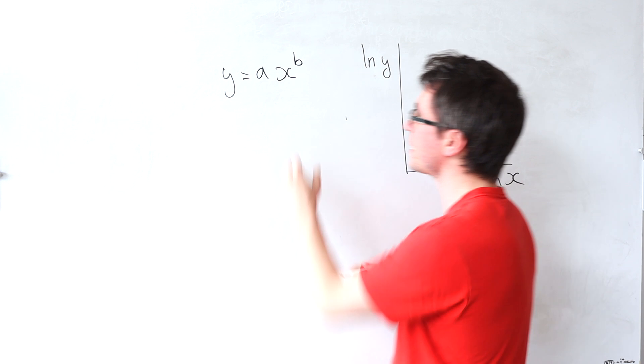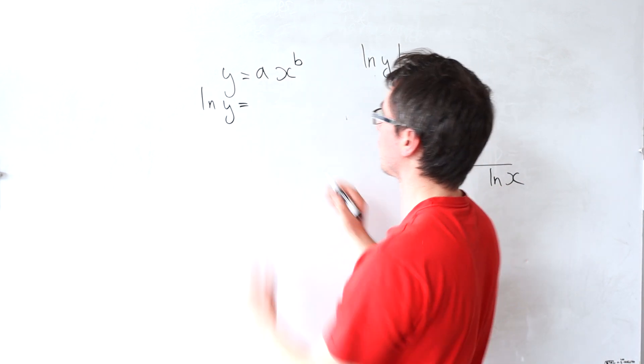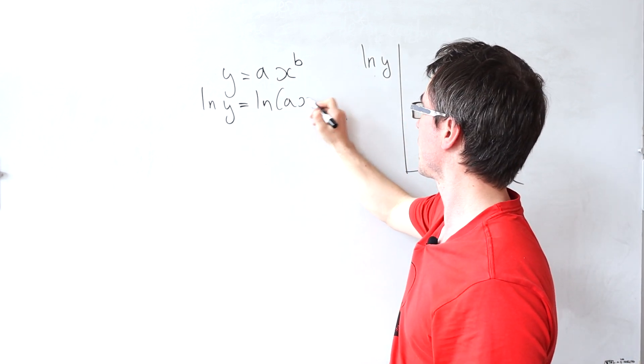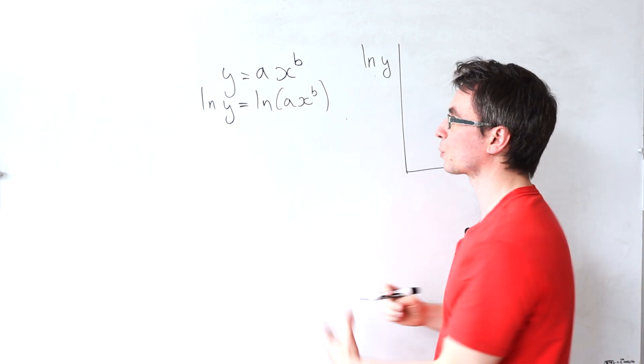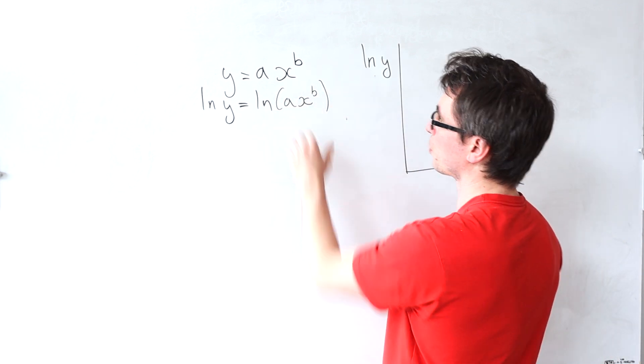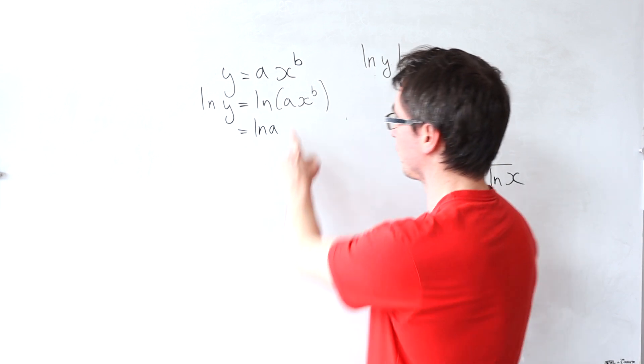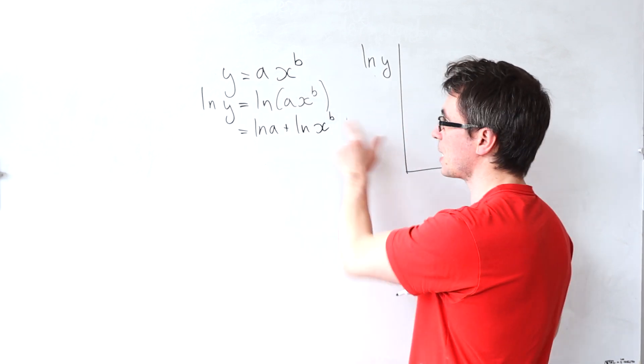To figure out the gradient, we need to take the ln of both sides. I'm going to have ln of y equals ln of ax to the power of b. Now, just to remind you of the rules about logarithms, the log of a product is actually equal to ln of a plus ln of x to the power of b.